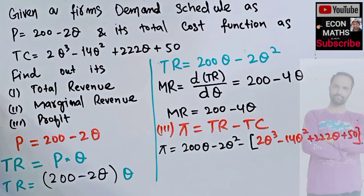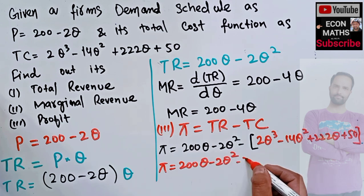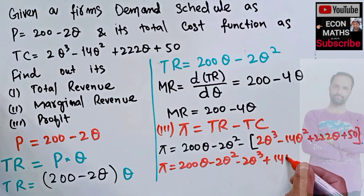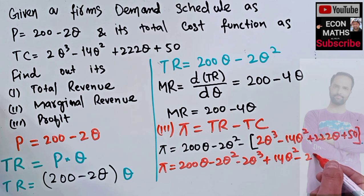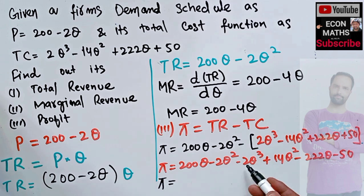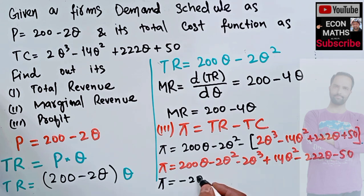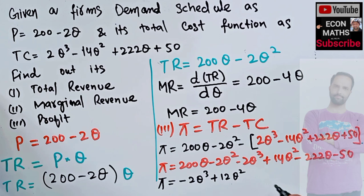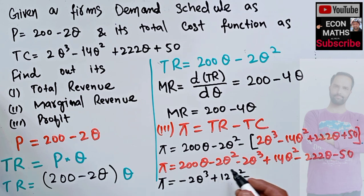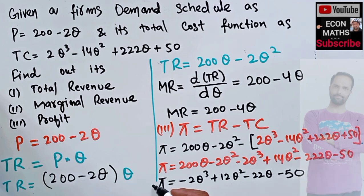So our profit equals 200q minus 2q squared minus 2q cubed, then minus into minus gives plus 14q squared, and minus into plus gives minus 222q, minus 50. Combining like terms: the q squared terms give minus 2q squared plus 14q squared equals 12q squared, and the q terms give 200q minus 222q equals minus 22q. So the profit function is: pi equals minus 2q cubed plus 12q squared minus 22q minus 50.